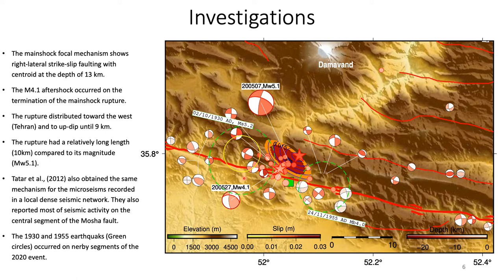The yellow circle marks the location where Eskandari and colleagues in 2018 observed several hot springs near the Mosha fault. We will later show these are related to Damavand volcano and how seismicity is induced on this segment of the Mosha fault. Additional focal mechanisms from the micro-seismic study by Tatar and colleagues in 2012 also locate events on this segment and show left-lateral strike-slip faulting.